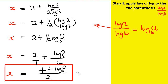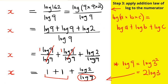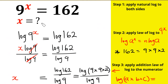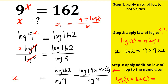Checking back from the question: the value of x equals (4 + log 2 base 3) all over 2. That is the value of x for 9 raised by the power of x equals 162.